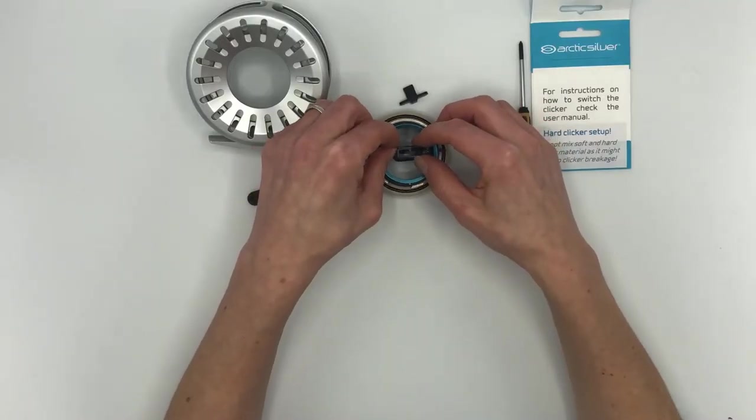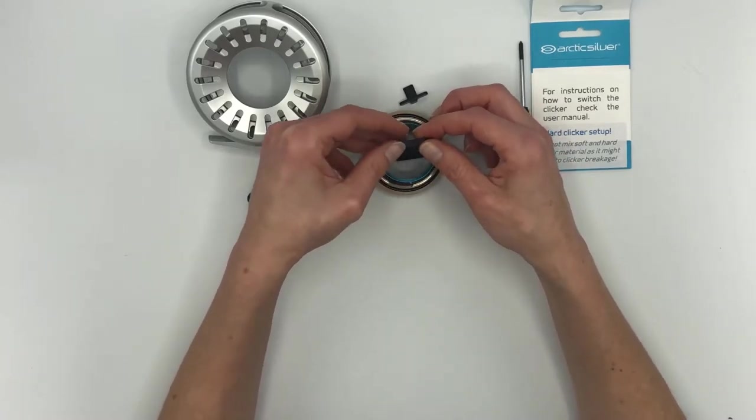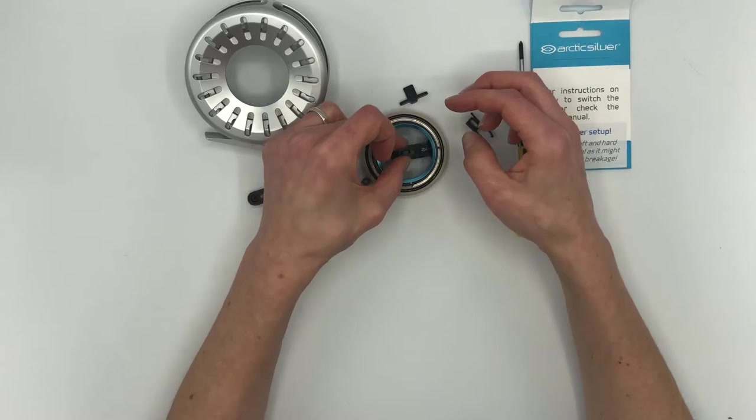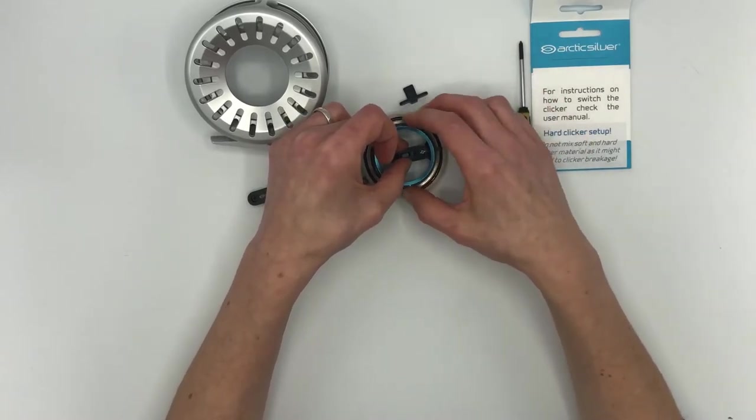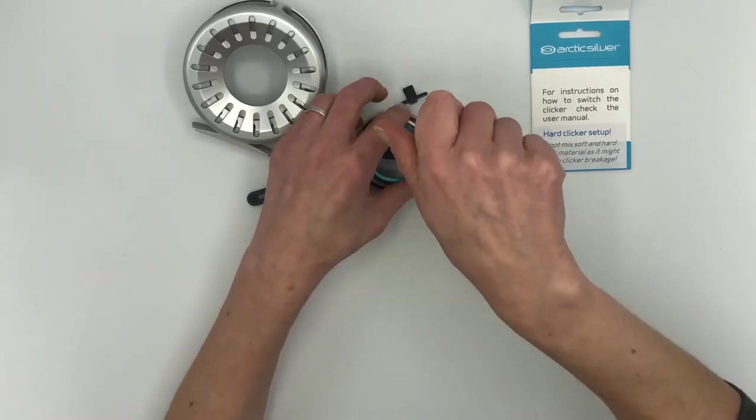It was assembled this way. If you want to have left retriever direction, you just turn it around like this, put it inside again, and fasten it with the screws. If you also want to change the clicker to hard material, you open this screw too.